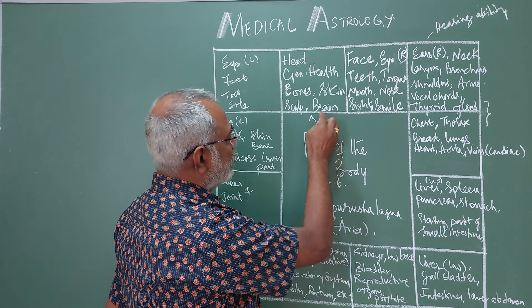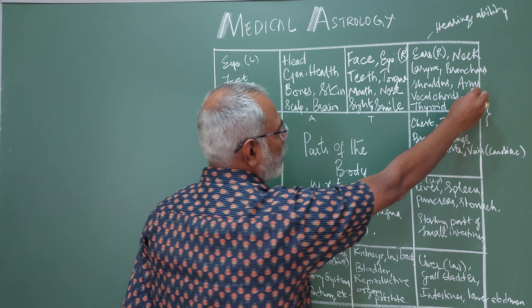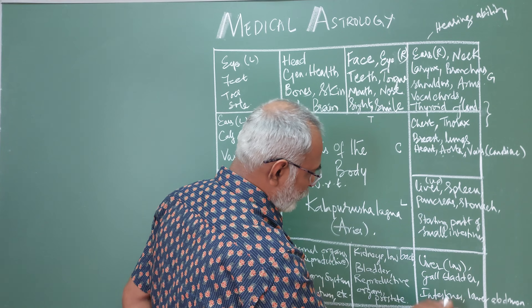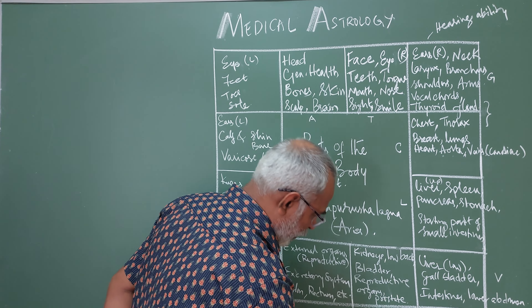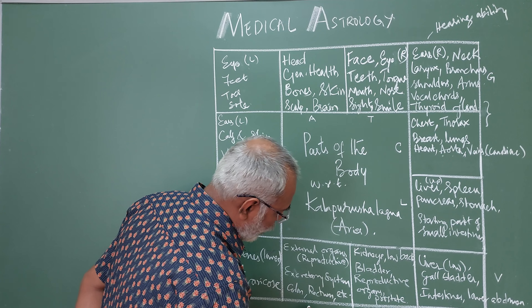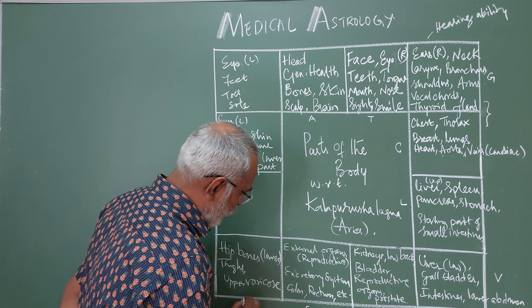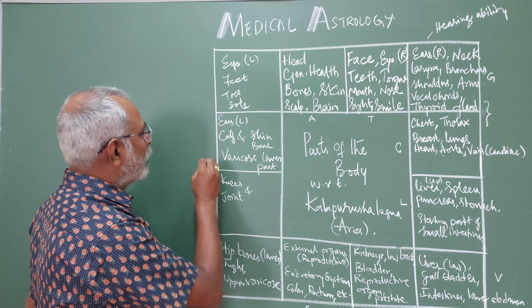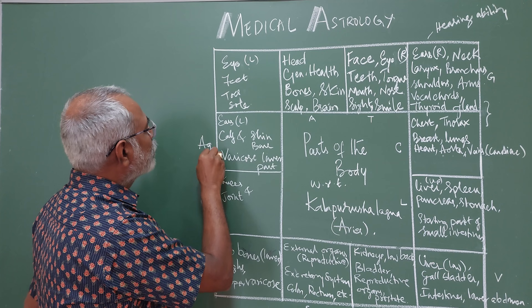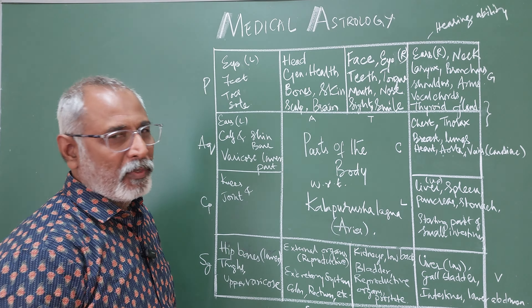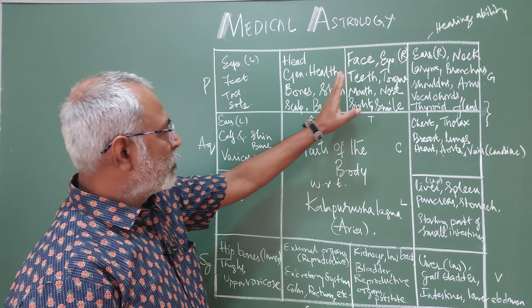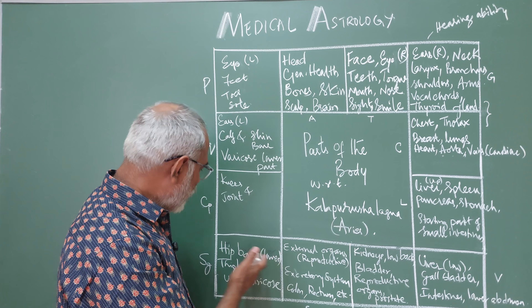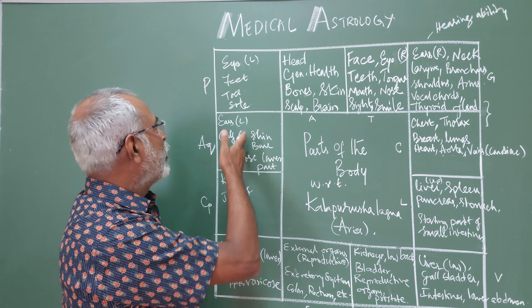So this is Aries, Taurus, this corner one is Gemini, Cancer, Leo, Virgo, Libra, Scorpio, Sagittarius, Capricorn, Aquarius, and Pisces.